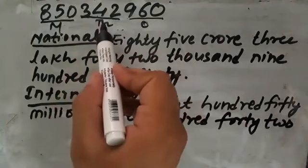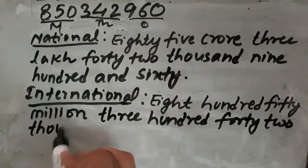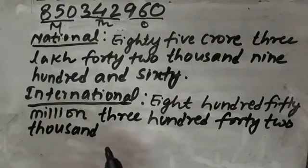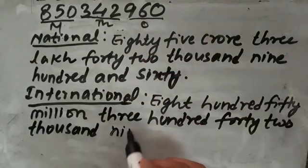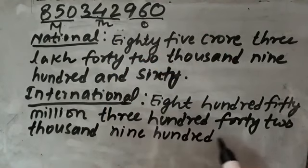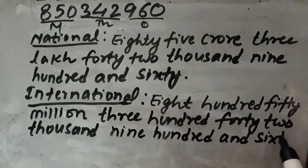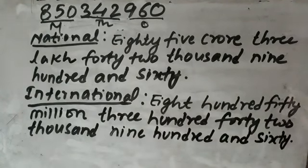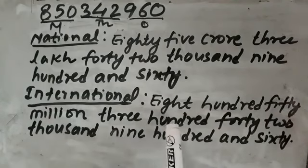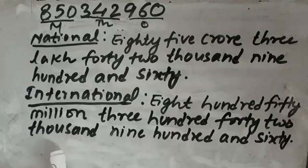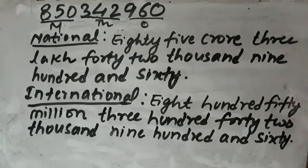342 comes under the period of thousand, so 342 thousand. In the period of ones there is 960, so 960. In this way we have written the number name in international system: 850 million, 342 thousand, 960.